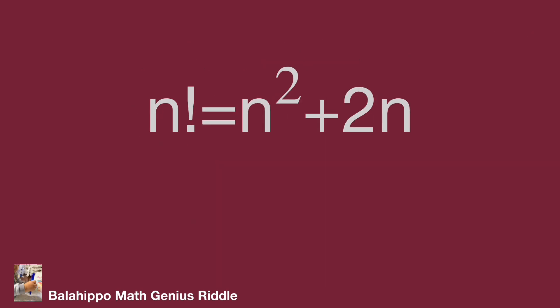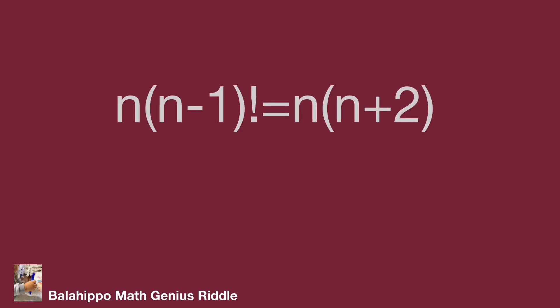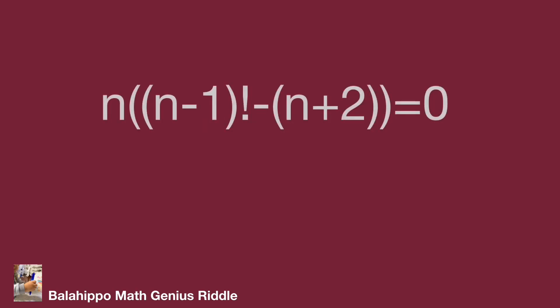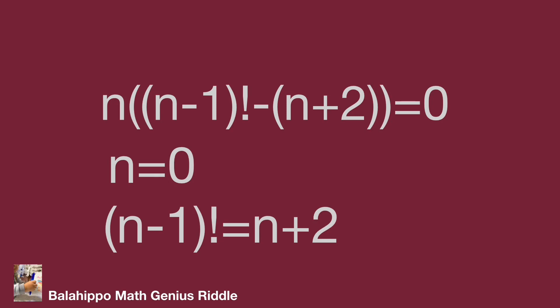Back to the question: n factorial equals n squared plus 2n. Rewrite the left side as n times (n minus 1) factorial, and the right side n squared plus 2n as n times (n plus 2). Then move both terms to the same side, factoring out n: n times [(n minus 1) factorial minus (n plus 2)] equals 0.